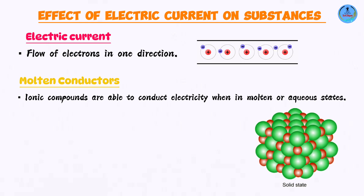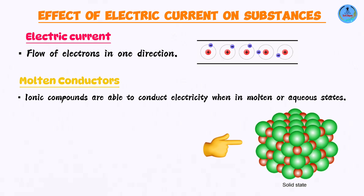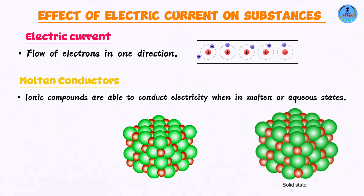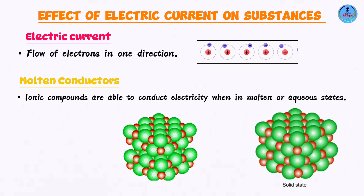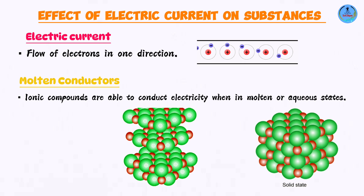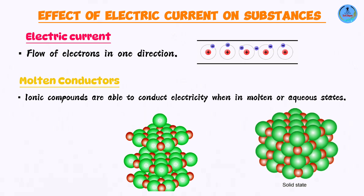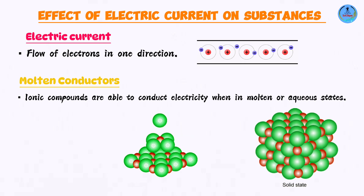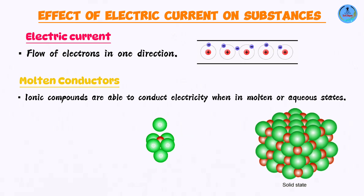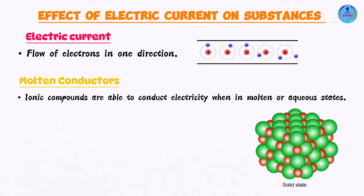When ionic compounds are in solid state, they're going to have ions that are in fixed positions. Ionic compounds have ions — these are charged particles. When in solid state, the ions are going to be rigidly held in fixed positions; all they can do is simply vibrate. They cannot move around, and you need to have particles moving around to conduct the electric current. So in solid state, ionic compounds do not conduct electricity.